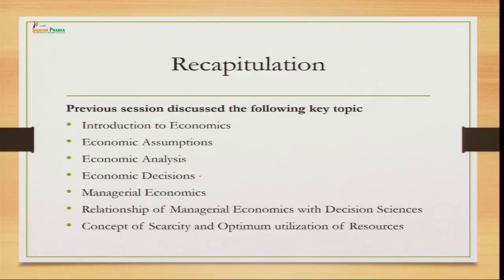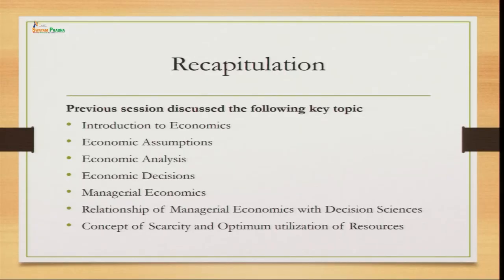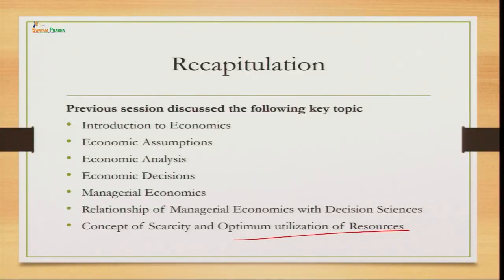We have talked about economic decisions like what to produce, when to produce, how to produce, for whom to produce, are we using our resources economically, and is the economy growing. We have talked about what managerial economics is and how we can establish a relationship of managerial economics with the decision sizes so as to find out the optimal solutions of our problems. And lastly, we talked about the concept of scarcity — the gap between limited resources and unlimited needs and wants — and the optimal utilization of resources.